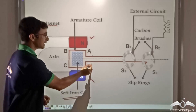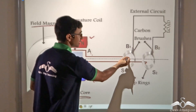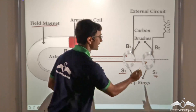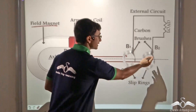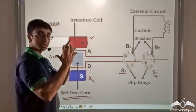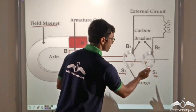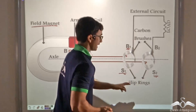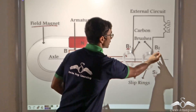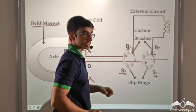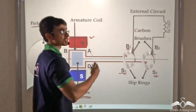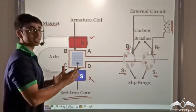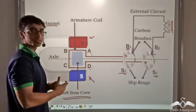Two ends of the coil, A and D, are drawn out — one end is connected to slip ring S1 and the other end is connected to slip ring S2. Much unlike the DC motor where there was one split ring, in this case there are two slip rings, S1 and S2. Slip ring S1 is touched against brush B1 and slip ring S2 is touched against brush B2. These are carbon brushes across which the external circuit is constructed — in other words, across brushes B1 and B2 the load is connected. This is the basic structure of a generator.